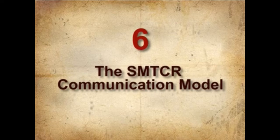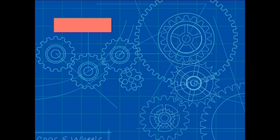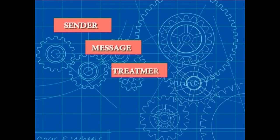Number six: the S-M-T-C-R communication model. Communication is a process by which messages are transferred from one source to the receiver. In agricultural extension education, it refers to the process of transferring an idea, skill, or attitude from one person to another accurately, timely, and satisfactorily. A simple communication model consists of the following elements: sender, message, treatment, channel, and receiver.